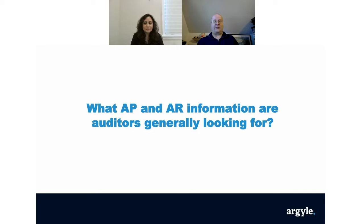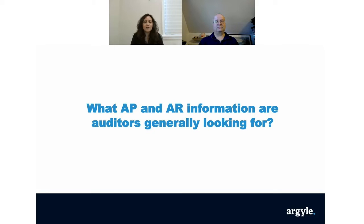What AP and AR information are auditors generally looking for? AP and AR information that auditors are generally looking for are always completeness, validity, and compliance of records. This is true across the board. If you are in these departments in the accounting organization, you should always be focused on your documentation, the completeness of the transaction, the truthfulness of the transactions, and complying with your own policies. This represents an accurate view of your business.